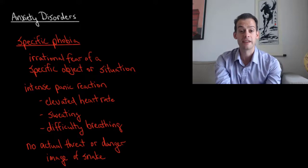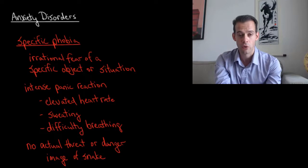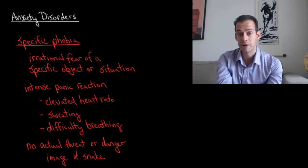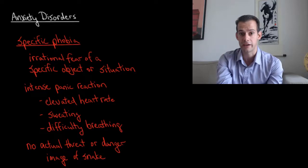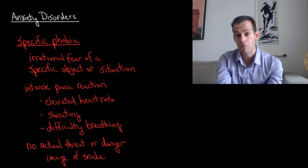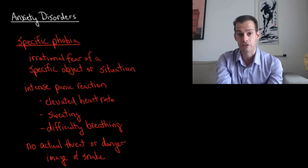Now it's important to note that this is an irrational fear and what that means is that there's no actual threat or danger. So if you're hiking and you come across a rattlesnake you might have this intense panic reaction but in that case that would be considered a rational fear. Whereas somebody with a specific phobia has an irrational fear because they might have that same intense panic reaction to just seeing an image of a snake or seeing a snake in a movie where there's no real danger present. And it is more common for us to see specific phobias for things like snakes, spiders, other insects rather than for things like cats or puppies.